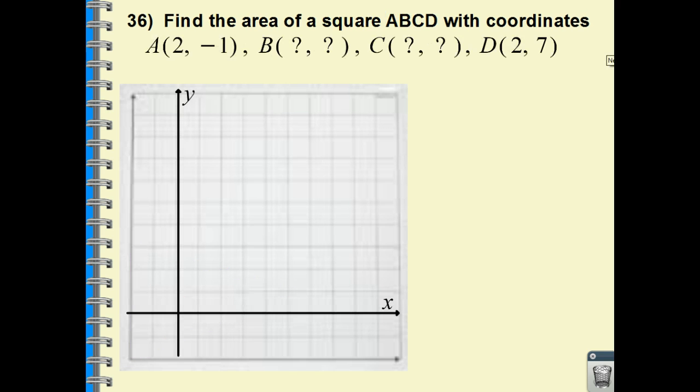Number 36, now we're going to find the area of a square. The formula is side times side. Let's figure out what our points of location are. We go 2, negative 1. We don't know B. We don't know C. We do know D is 2, 7. So knowing that it's a square, I have one side length. Let's count out the units of that side length. We go 1, 2, 3, 4, 5, 6, 7, 8. So we have a square that is 8 by 8.